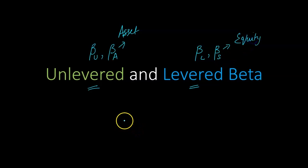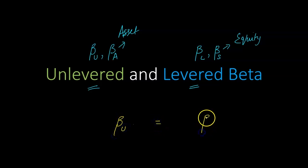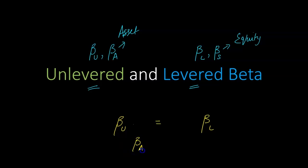In a previous video we established that if a firm is entirely funded with equity — in other words there is no debt — and for simplicity assuming no corporate taxes, then a firm's unlevered beta is exactly equal to its levered beta. More commonly written: the firm's asset beta is the same as its equity beta, but this is only true if the firm is funded entirely with equity.